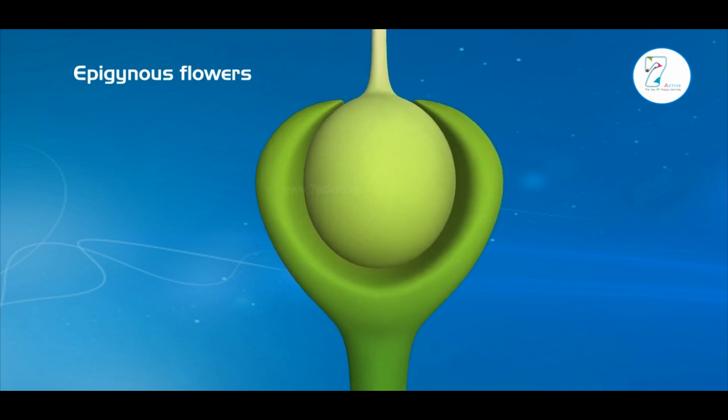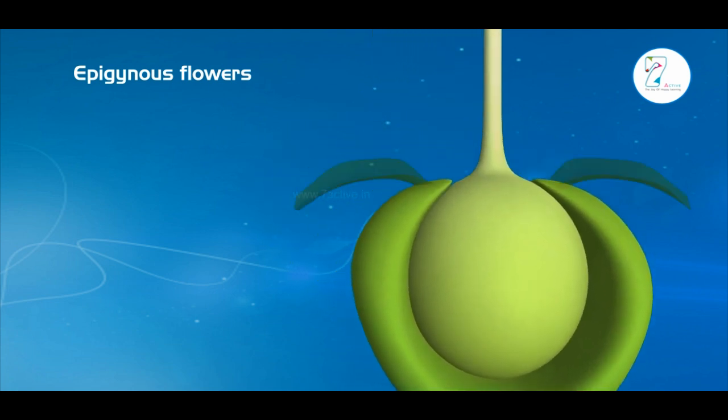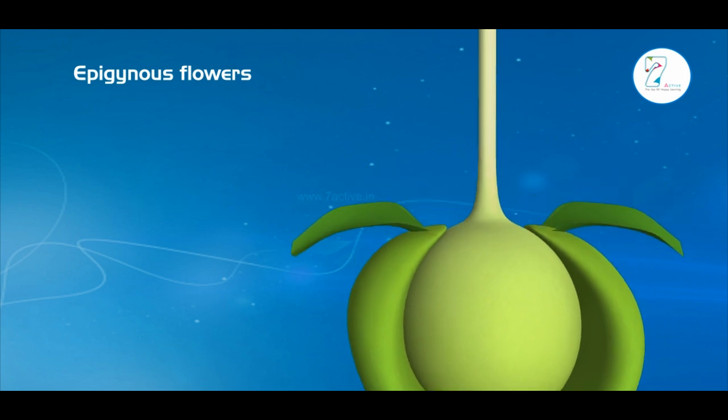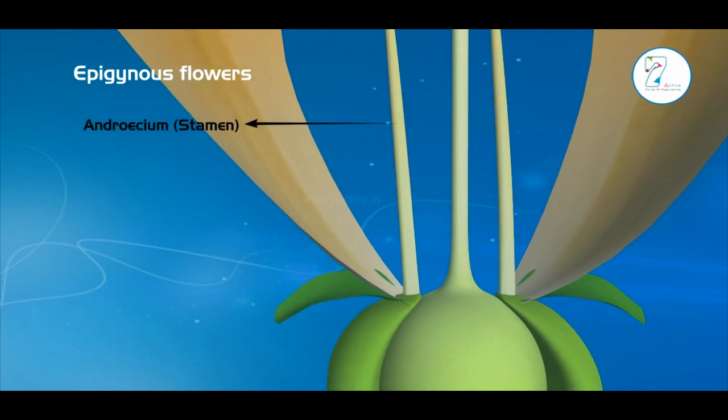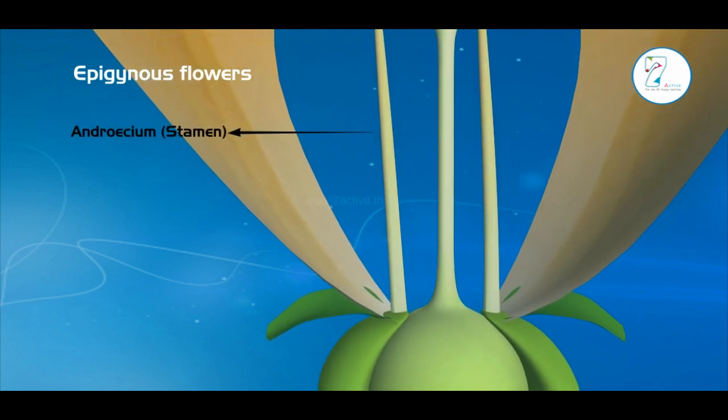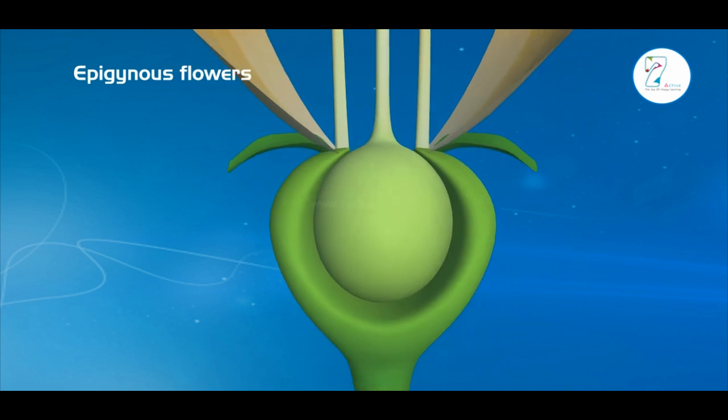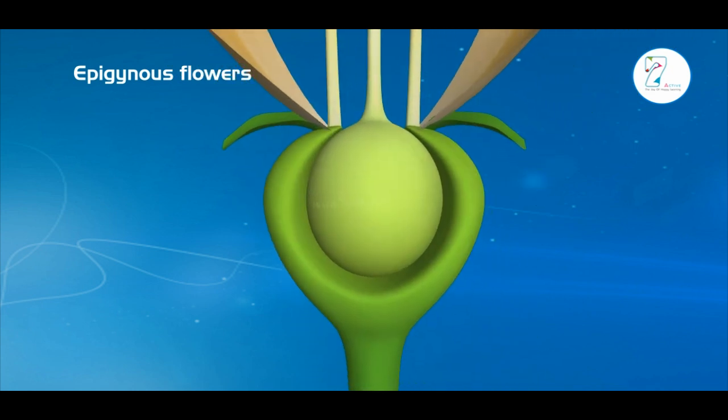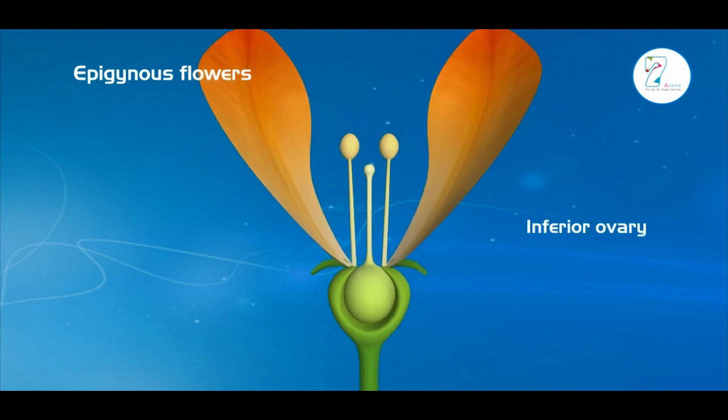The wall of the ovary is completely fused with thalamus. The remaining floral parts like calyx, corolla, and androecium are arranged along the margins of the thalamus. The ovary is completely inside the thalamus. So the ovary is called inferior ovary.